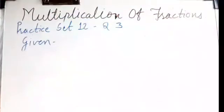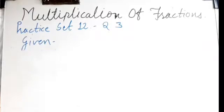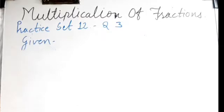Now see question number three: of the total number of soldiers in our army, four-ninths are posted on the northern border and one-third of them on the north-eastern border. If the number of soldiers in the north is 5,40,000, how many are posted in the northeast? First, we write the given things.